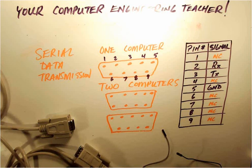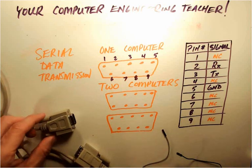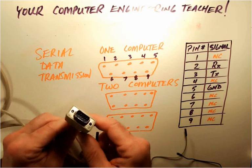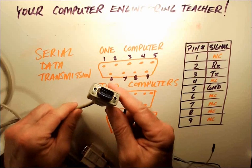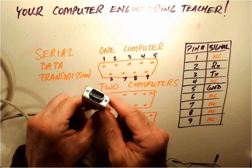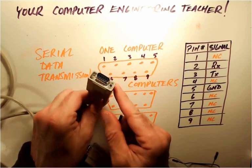Before we do that lab, we have to understand some of the connectors and how this works. So here is an older cable system. This is called a serial cable and it's got an RS-232 connector on it.